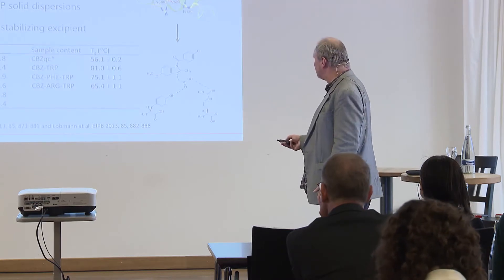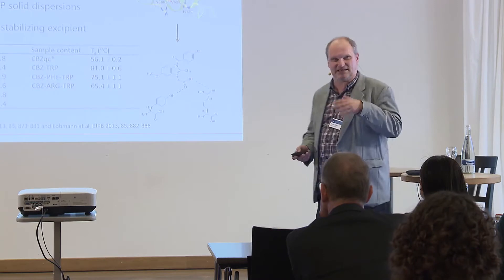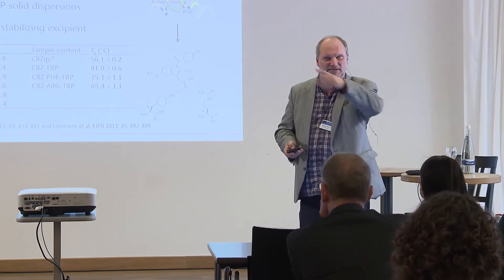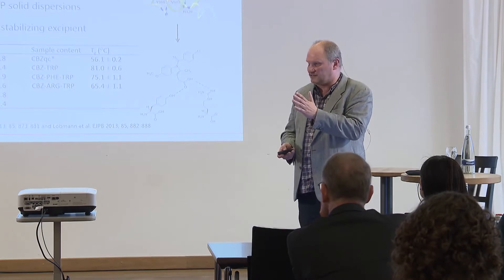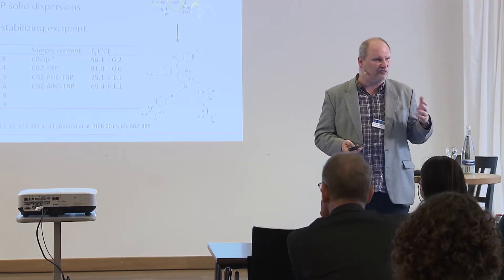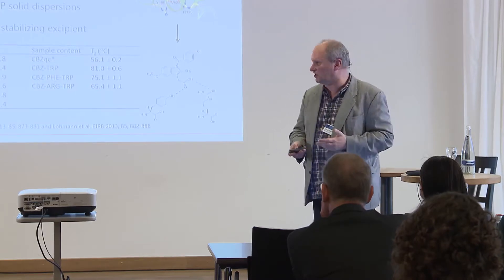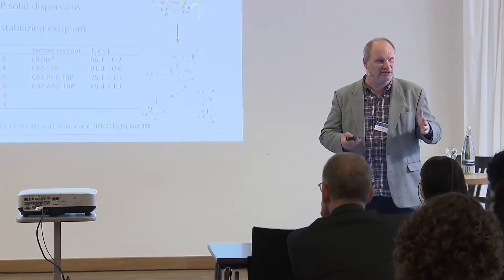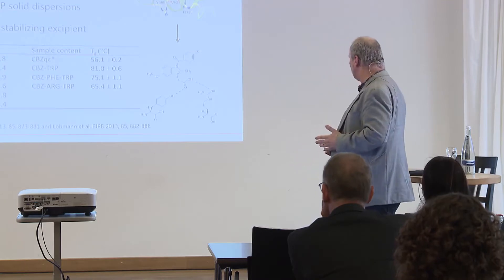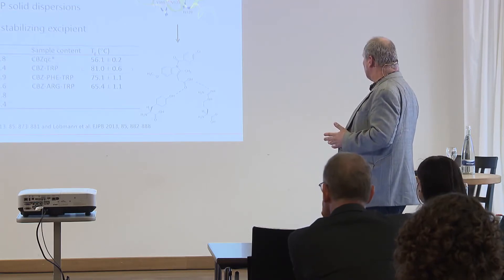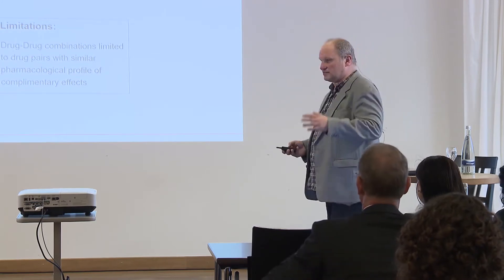With amino acids, we are reaching fairly high glass transition temperatures. This is because the amino acids themselves have a very high melting point and a correspondingly high glass transition temperature. If I mix them with the drug that has a lower Tg, according to a Gordon-Taylor type relationship, we get a Tg somewhere in the middle — so much higher than that of the pure drug.